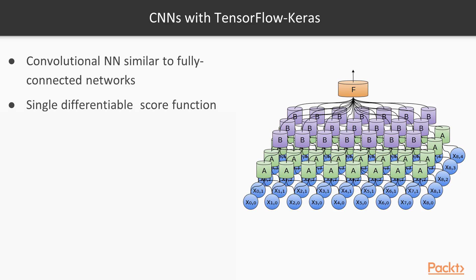The whole network represents a single differentiable score function. This function takes in as input raw image pixels on one end and computes class scores at the other. The output scores are fed into the loss function to compute the multinomial class probabilities.